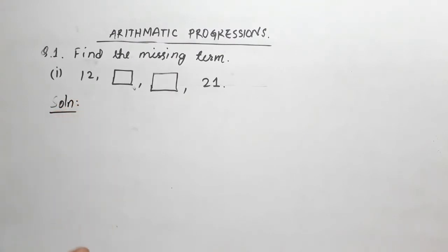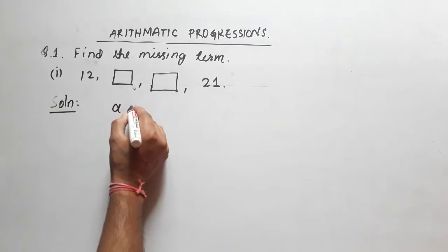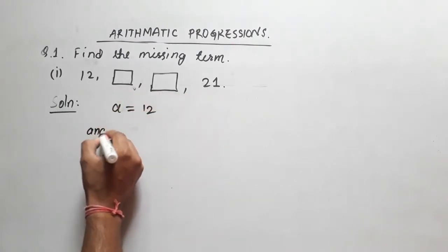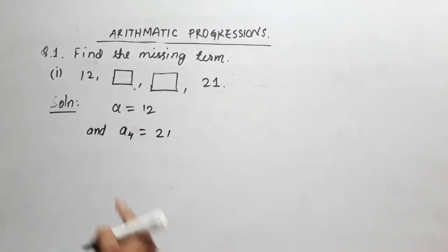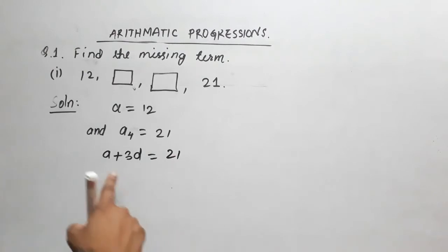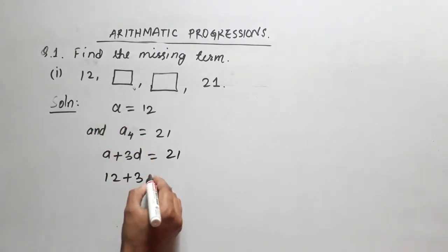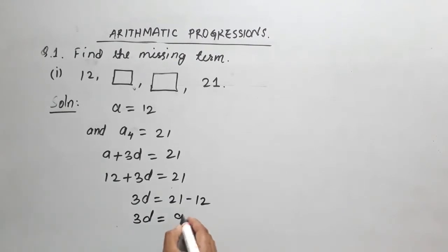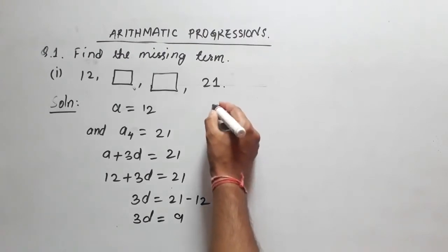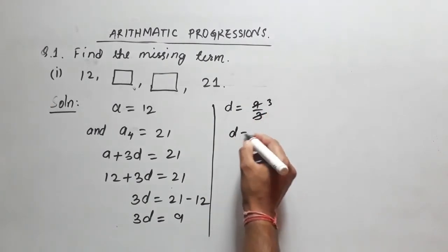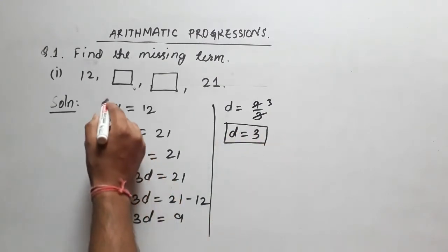So from the given data, the first term a equals 12. The fourth term a4 is given as 21. Now, a4 means a plus 3d, so a plus 3d equals 21. Substituting a equals 12: 12 plus 3d equals 21, so 3d equals 9, therefore d equals 3.